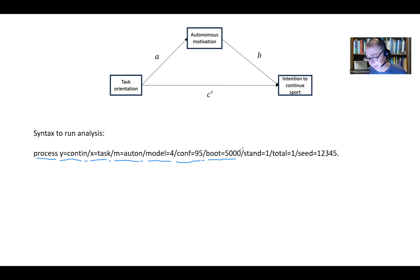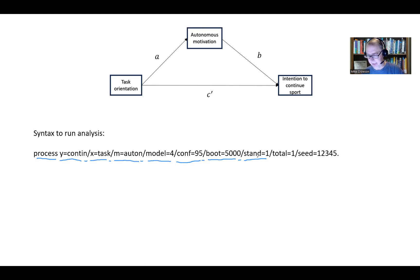5,000 is the default number of bootstrap samples if you're using the drop-down menu system. You can increase that if you want, but we'll leave it as is. Then forward slash STAND equals 1 — in addition to unstandardized regression parameters, this also produces standardized regression coefficients. Then forward slash TOTAL equals 1 if you want the total effects model.